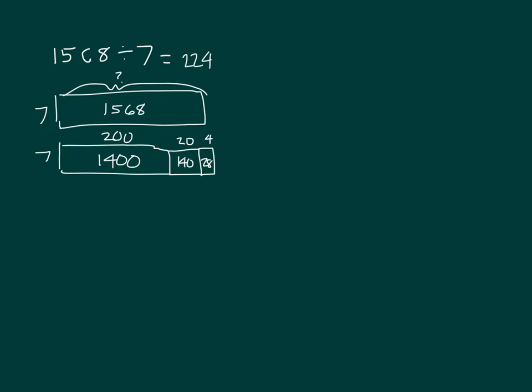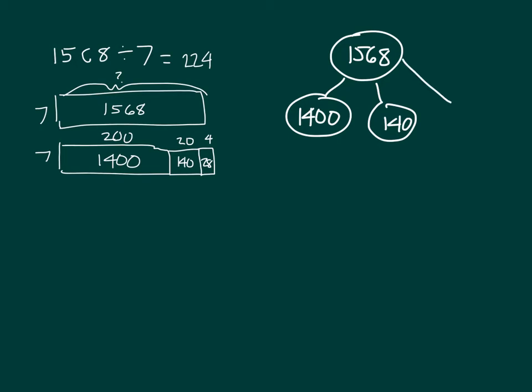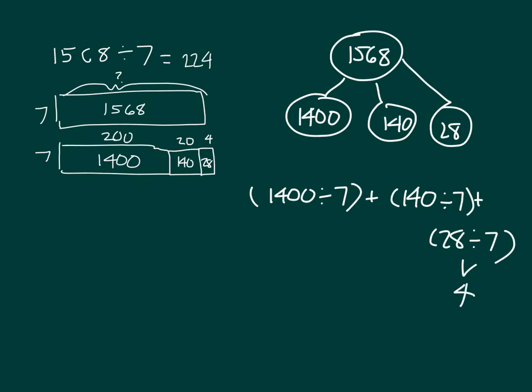Let's continue to look at this problem to see what we did. We broke apart 1568 into its different parts. We first looked at 1400, and then we took out 140, and then we also had 28. So our written method is 1400 divided by 7 plus 140 divided by 7 plus 28 divided by 7. If we evaluate this, we have 4, we have 20, and we have 200. And when we add those together, we get 224.